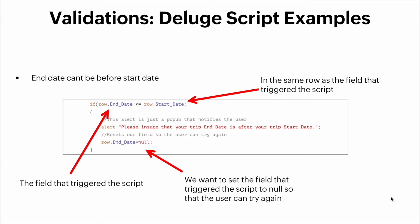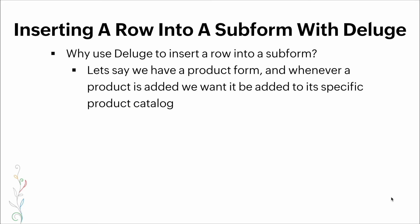For the second workflow, we check that the end date field value is less than or equal to the start date field value. If so, we alert the user to check that the trip end date is after the trip start date. If it triggers, we set the value of the end date field to `null` so the user can try again.